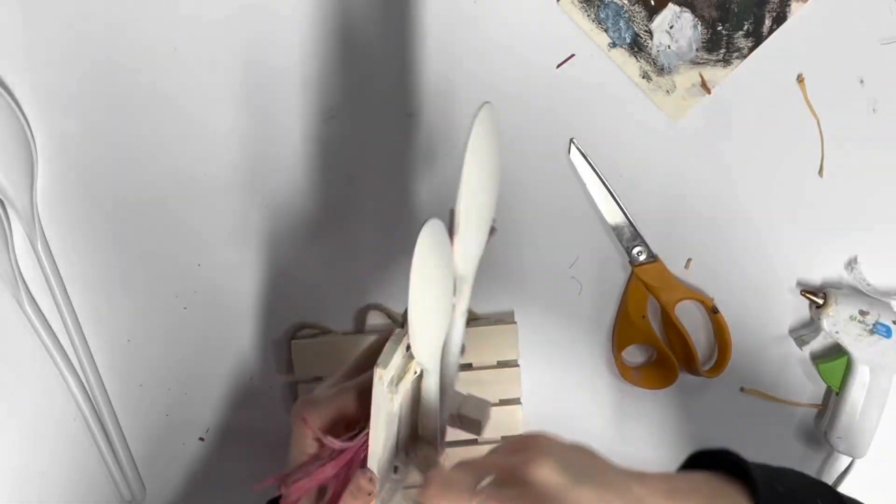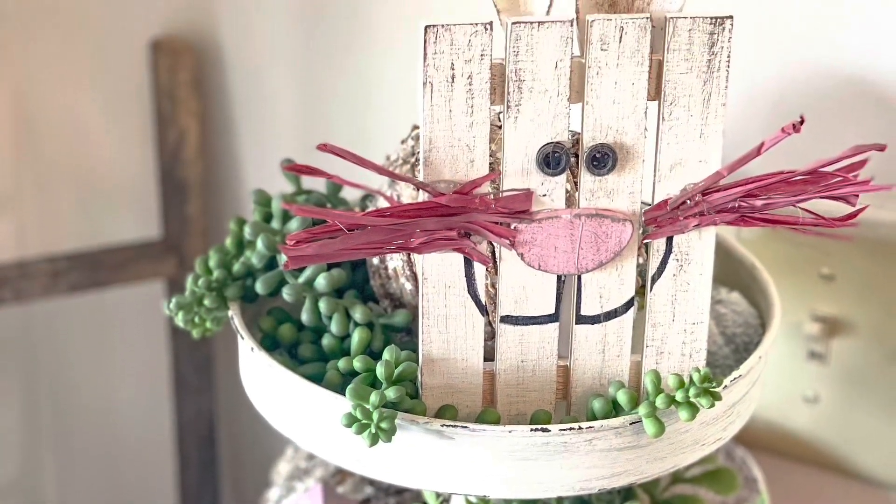And like I told you guys earlier, I put two little blocks on the back just to give that some more support and it works out really good. And I ended up putting this on the top of my tiered tray and it's perfect. I love it so much.